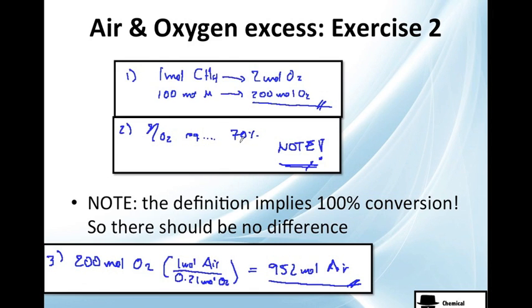Number two. Calculate the amount of oxygen required for 70%. And this is a tricky one. It's kind of like a joke because the definition of theoretical oxygen implies a 100% conversion. So the definition doesn't care how much the conversion is because, by definition, you need to have 100%. So this is a tricky one and there should be no difference. The required oxygen will be the definition by 100%. So it will be the same. 200 mols. You need 200 mols.